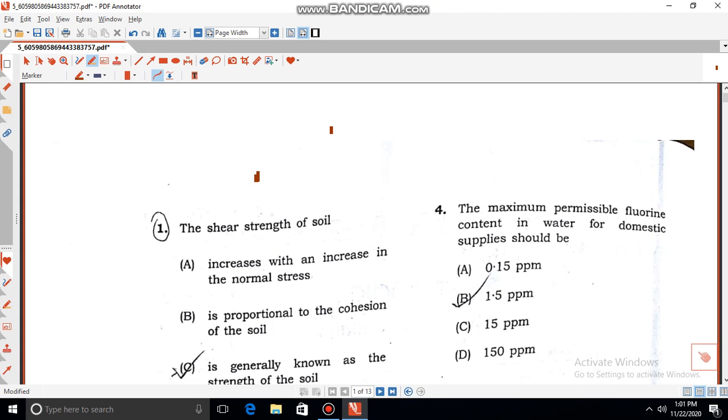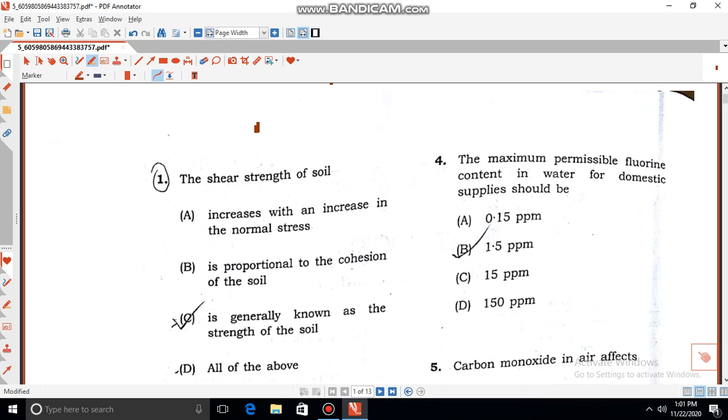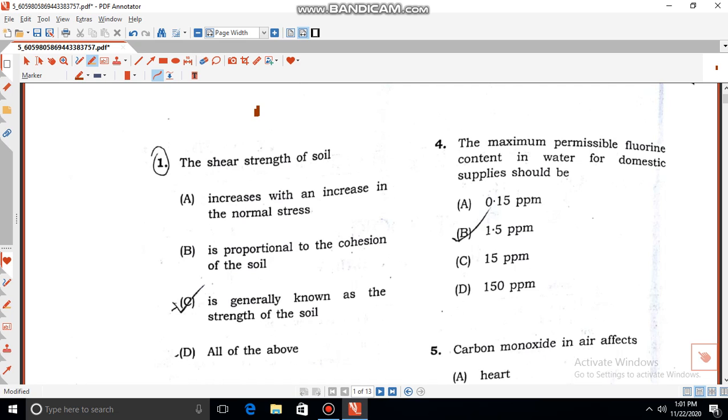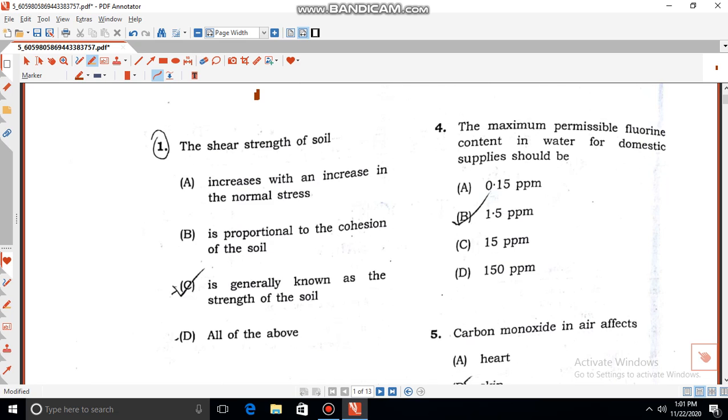Okay. Our first question is: the shear strength of soil. Option A: increases with an increase in the normal stress. B: is proportional to the cohesion of the soil. C: is generally known as the strength of the soil. D: all of the above.